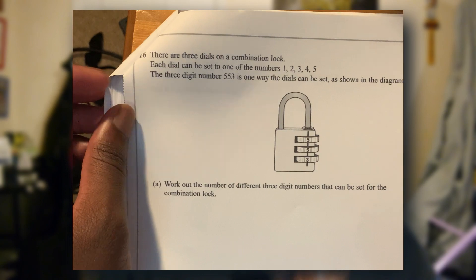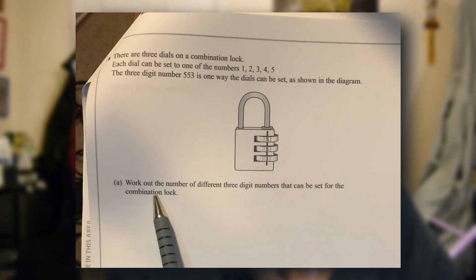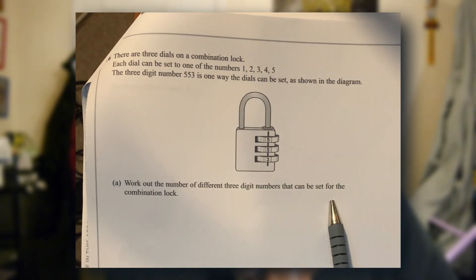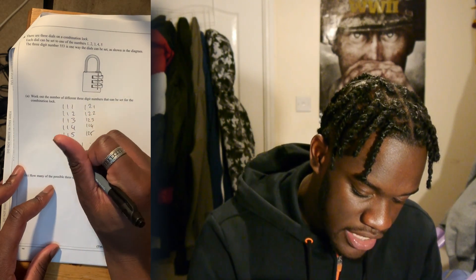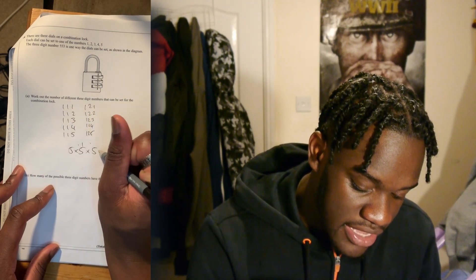3,000 on a combination lock. I've got a number of different three-digit numbers that can be set for the combination lock — I have to write out all the different combinations. Give me a minute. 1, 2, 1, 2, 1. I can't lie, I'm tired. I'm going to guess — 5 times 5 times 5 is 125.